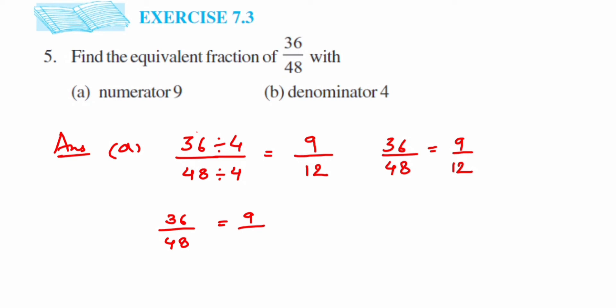We don't know the denominator number, so we're going to take it as x. Now we have to find the value of x by cross multiplying. Take x to the left-hand side and bring 36 to the denominator, so x will be equal to 9 times 48 over 36.